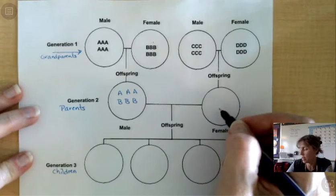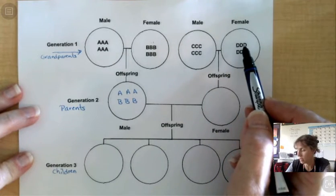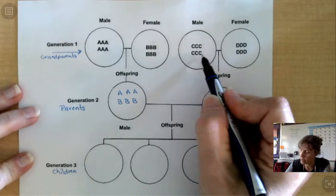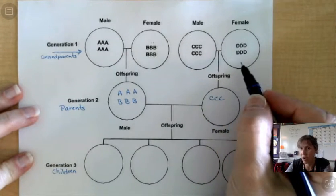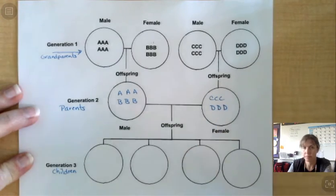So in order to find the offspring, the traits that pass from this Grandpa and this Grandma to this Mom, you have to take three from the male and three from the female.